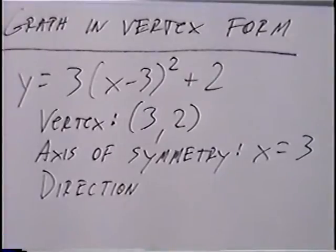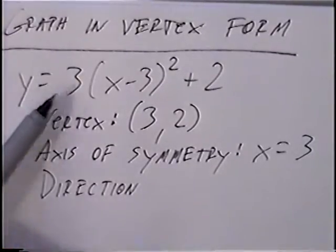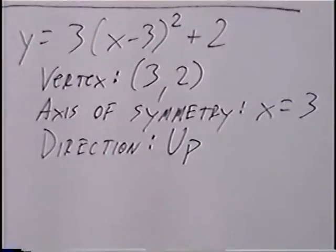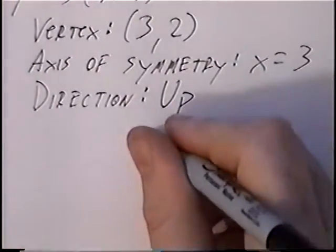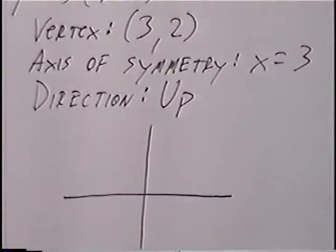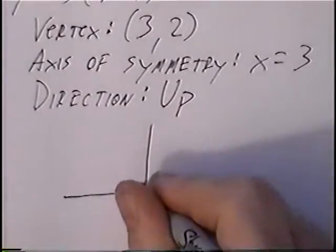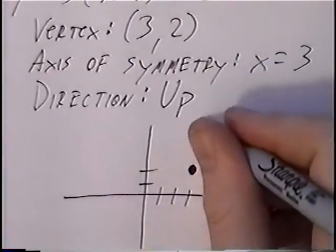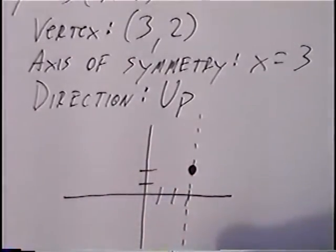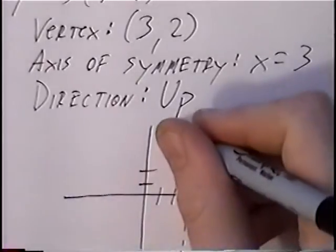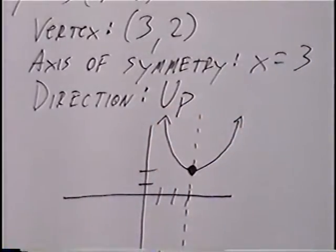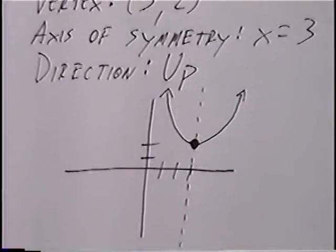The last part we can find from vertex form is the direction, which will be either up or down. Looking at the value of a, the number outside the parentheses — positive 3 — the direction of this graph would be up. Graphing from here, we draw the x-y axis with the vertex at (3, 2). We can draw the axis of symmetry as a dashed line through the vertex, and sketch the parabola going through the vertex and pointing up.